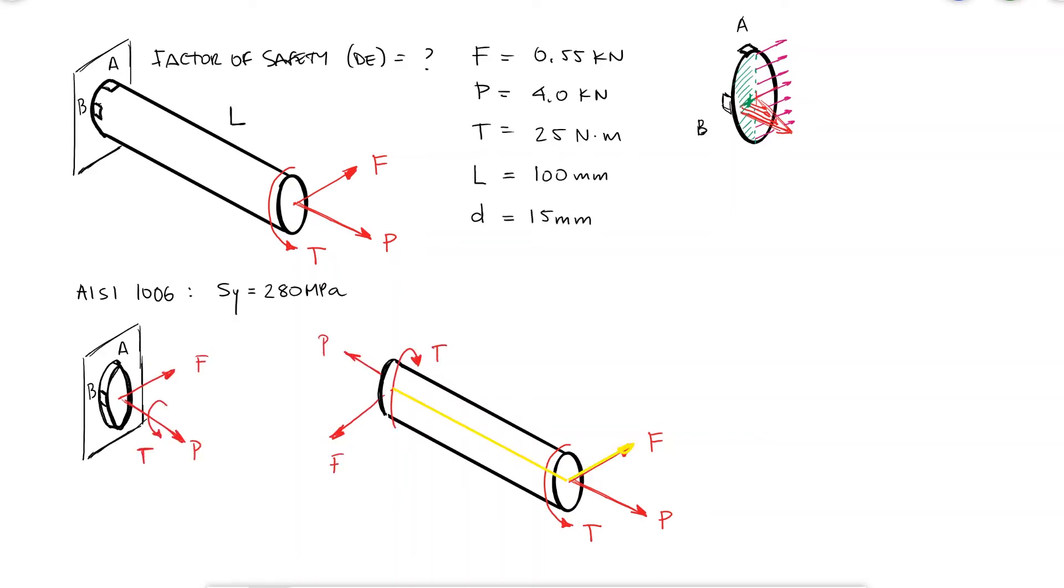The force F at a distance of 100 millimeters will be counteracted by an internal moment about the y-axis. This moment will create a positive normal stress due to bending at B.